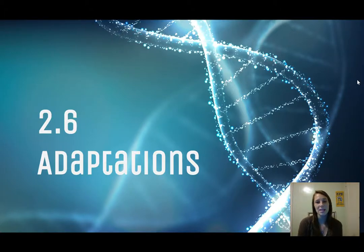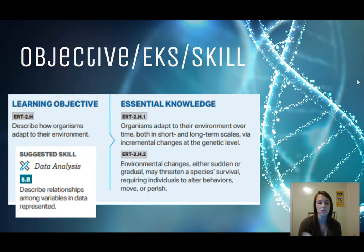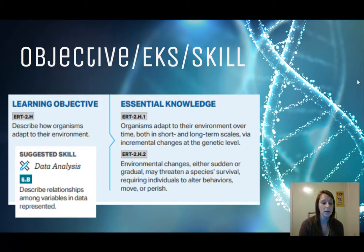Hey everyone, it's Ms. Seward and today we're going to be learning about section 2.6, which is on adaptations. The learning objective for today is that you'll be able to describe how organisms adapt to their environment. The essential knowledge you're going to be gaining is how organisms adapt to environments in short-term and long-term scales and how different environmental changes can impact the populations of organisms in that ecosystem. You'll also get a chance to practice the data analysis skill where you'll describe relationships among variables in data given to you.